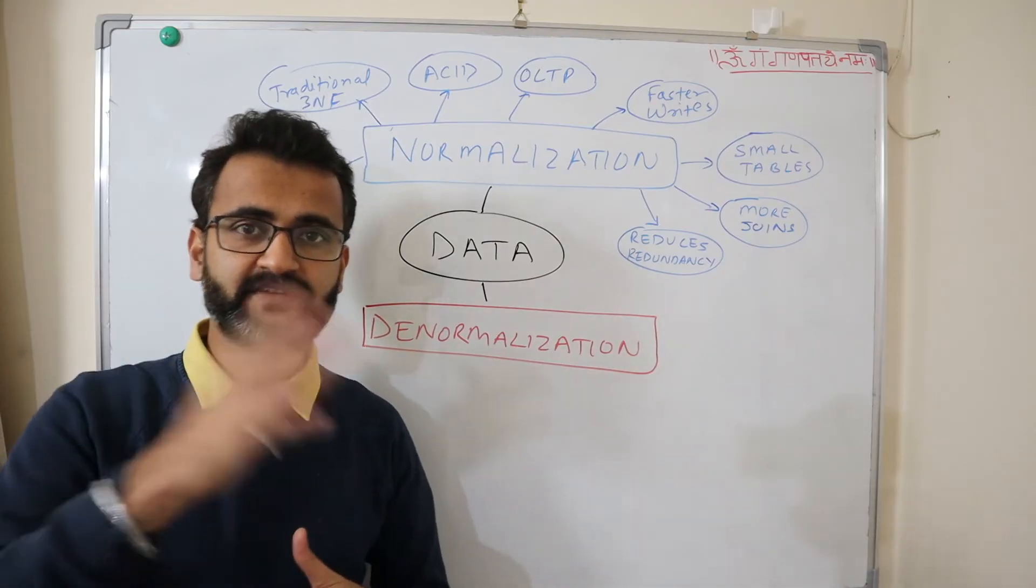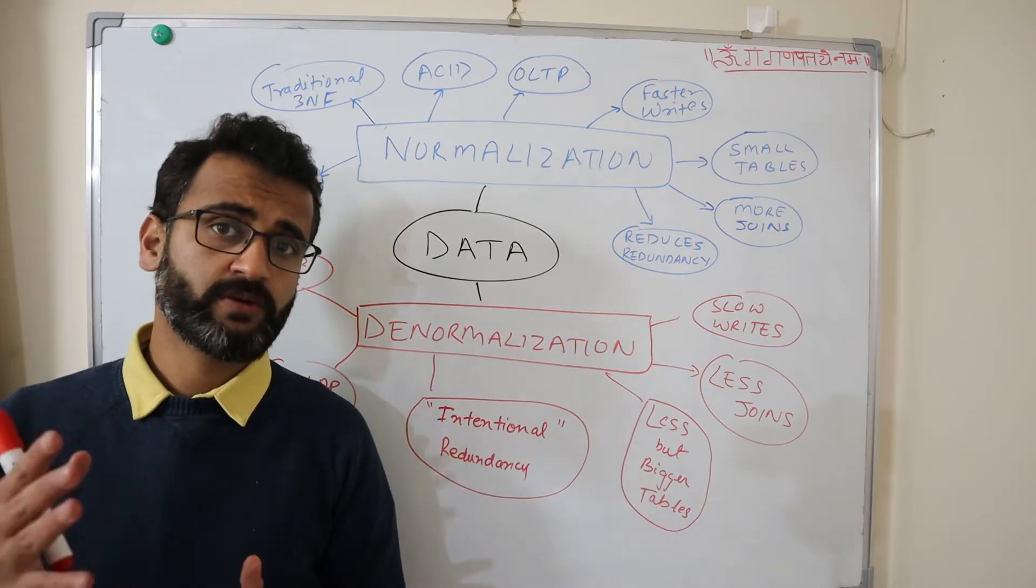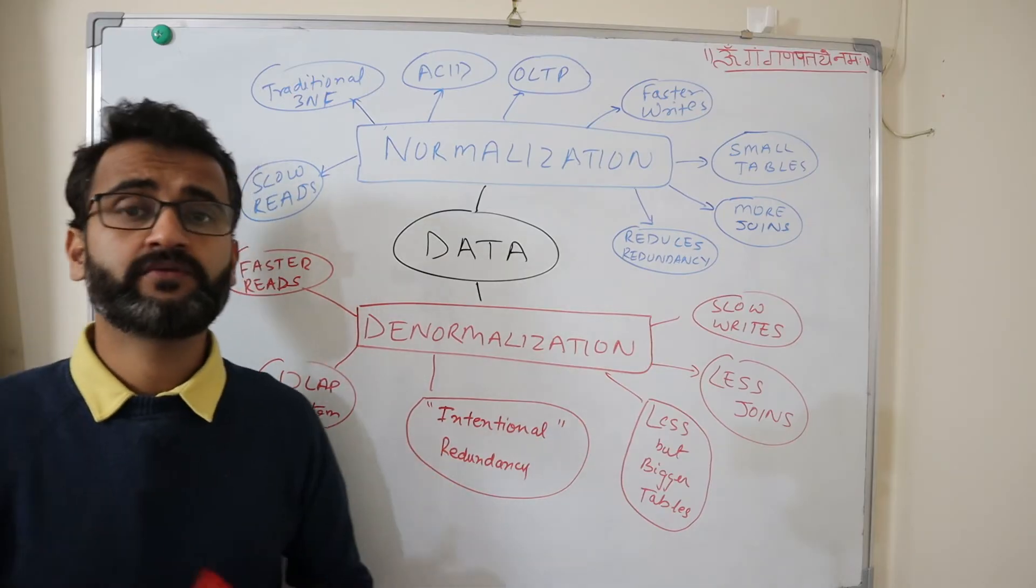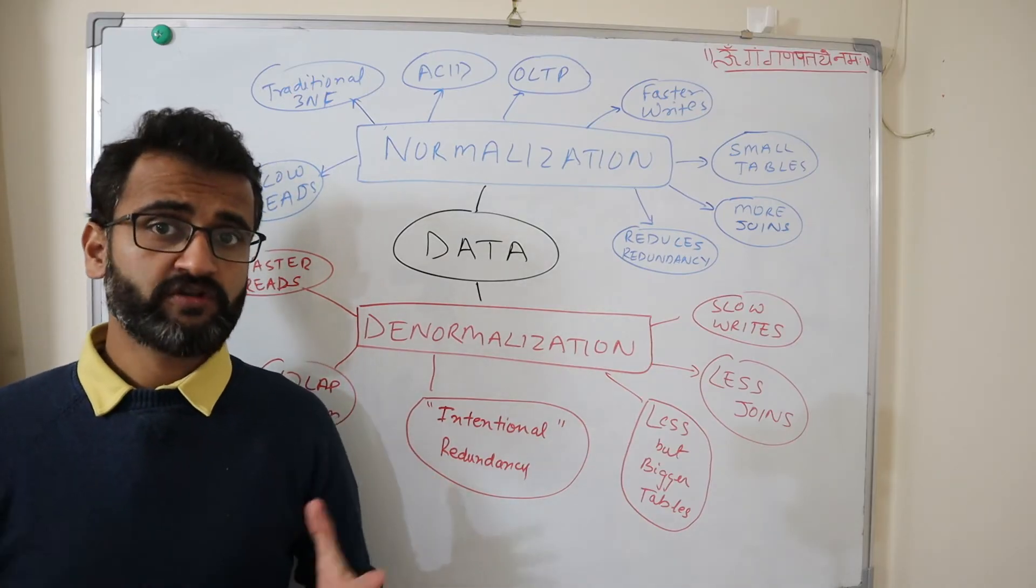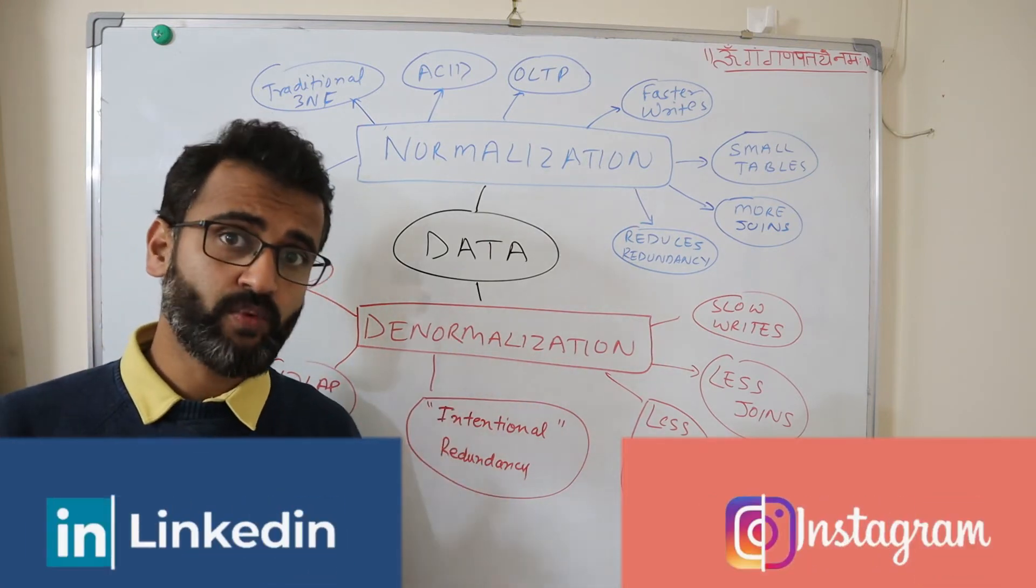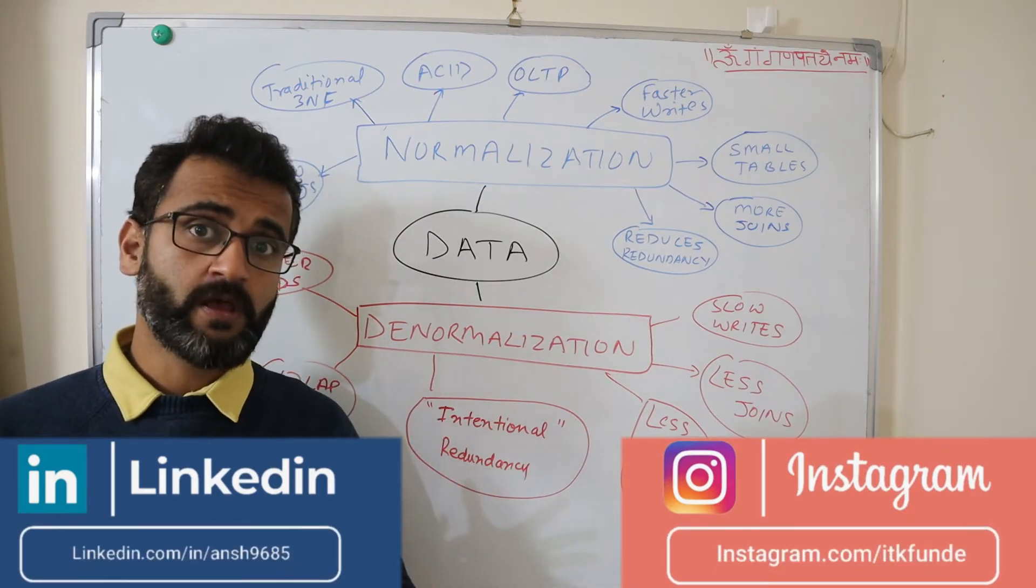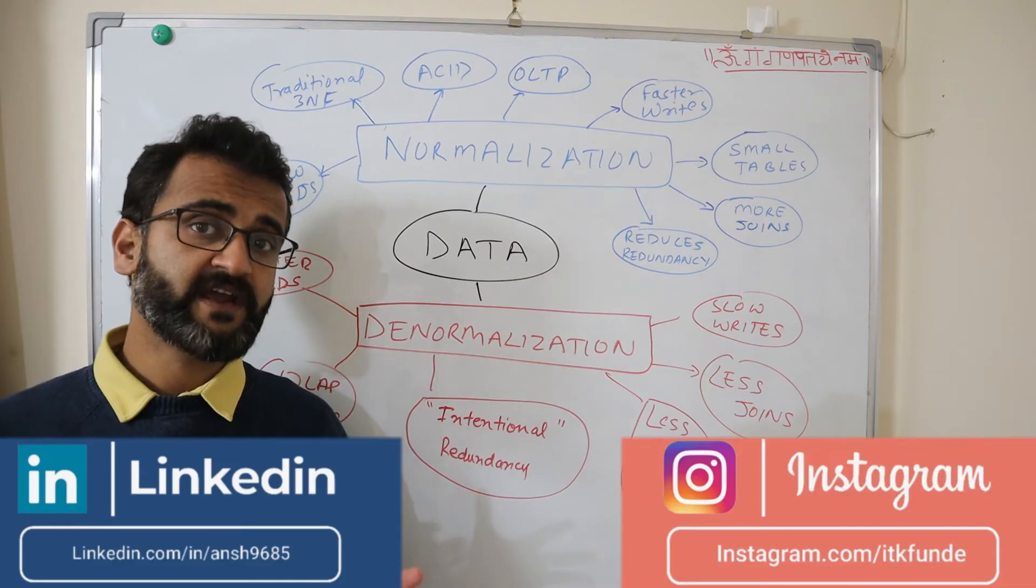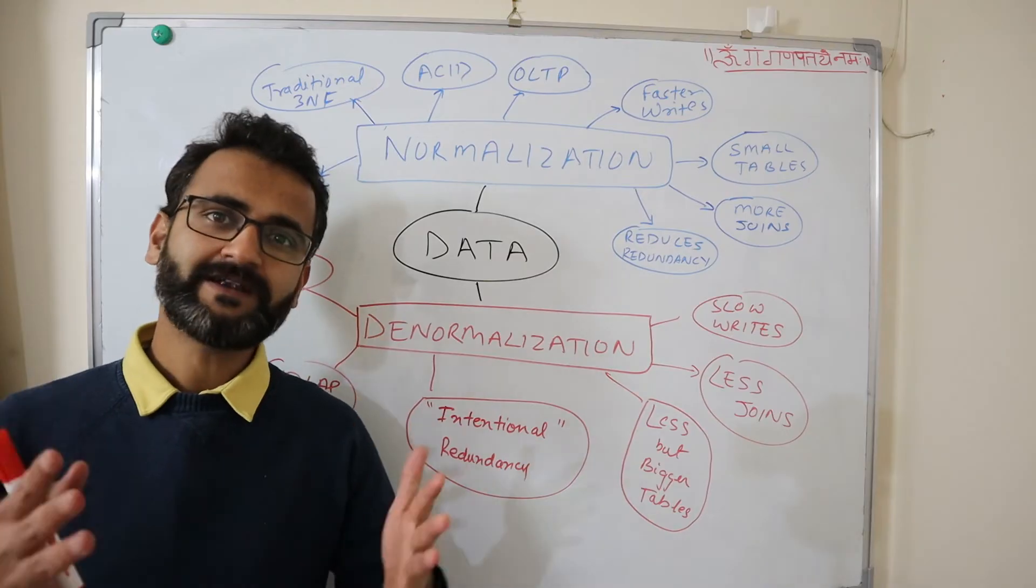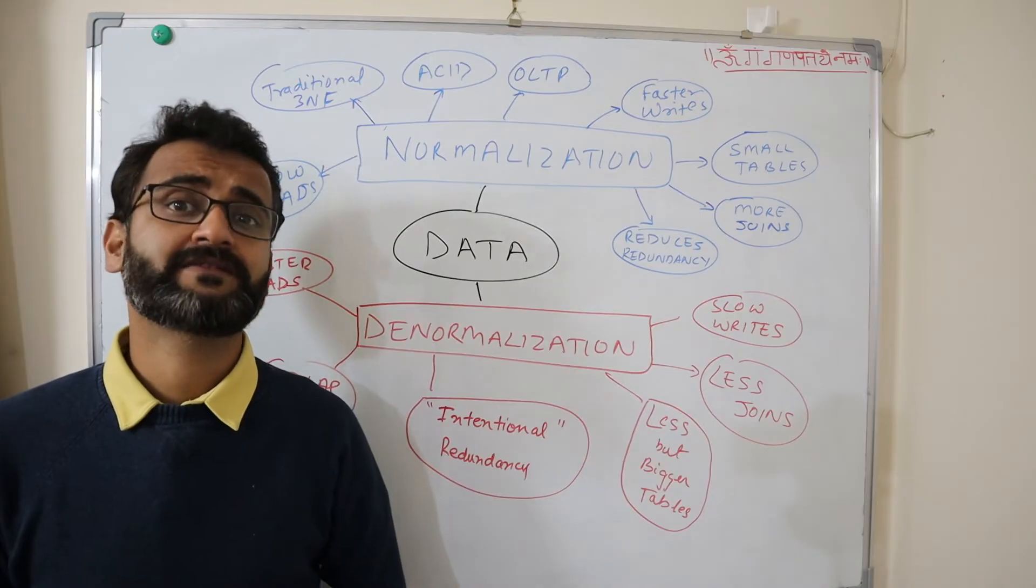Let's understand the different features of denormalization. Denormalization works exactly in the opposite way and intentionally introduces redundancy into the data model because we want intentional duplicacy or redundancy so that we have everything in one plate and we directly get it from that particular table. The caveat here is that you cannot afford to have incorrect data. Whichever technique we are using for data denormalization, we have to ensure that data correctness is intact.